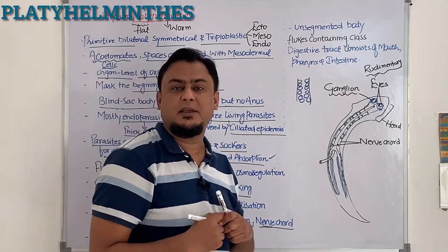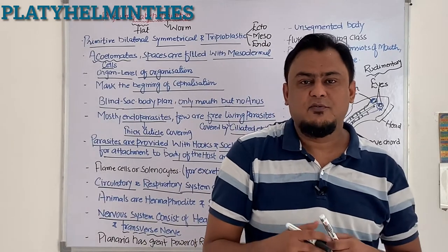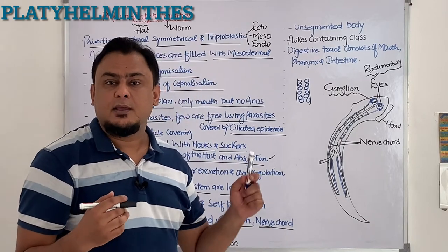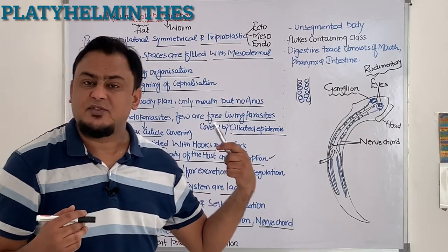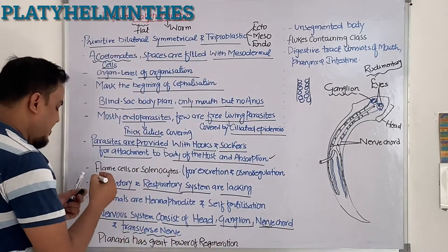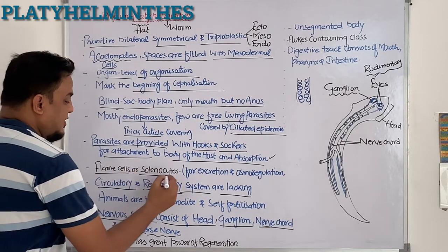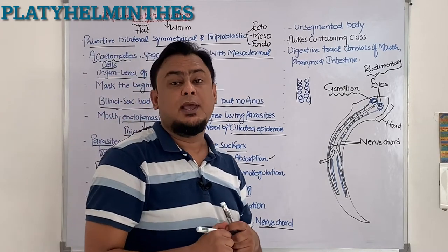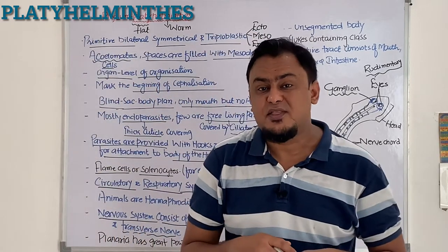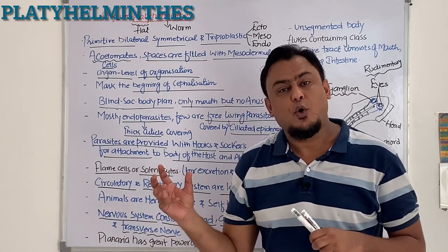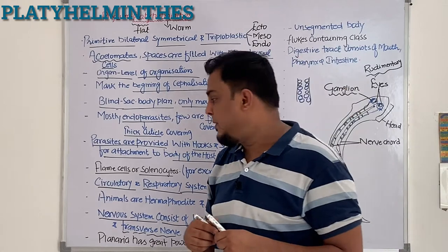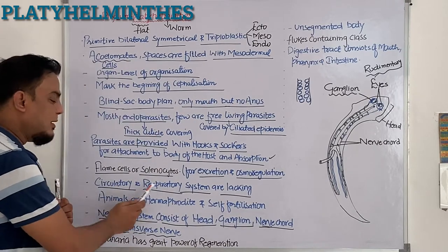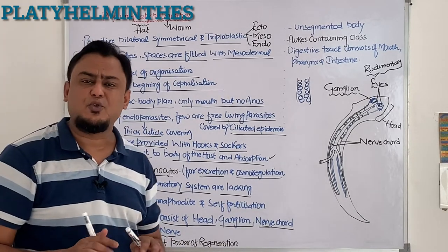Regarding excretion, there is a specialised cell known as flame cells, also called solenocytes. This question comes in exams: how does excretion occur in Platyhelminthes? Simply by flame cells. Flame cells are responsible for excretion as well as maintaining the level of fluid inside the body, so it is also an osmoregulatory organ. So flame cells function in excretion and osmoregulation.